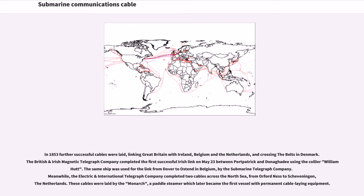In 1853, further successful cables were laid, linking Great Britain with Ireland, Belgium and the Netherlands, and crossing the belts in Denmark. The British and Irish Magnetic Telegraph Company completed the first successful Irish link on May 23 between Port Patrick and Donaghadee, using the collier William Hutt. The same ship was used for the link from Dover to Ostend in Belgium, by the Submarine Telegraph Company.